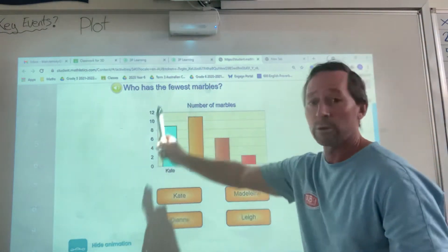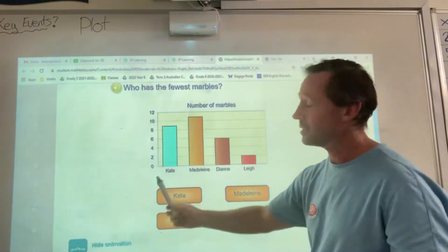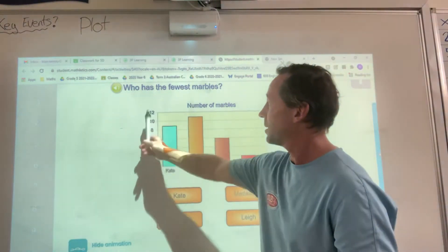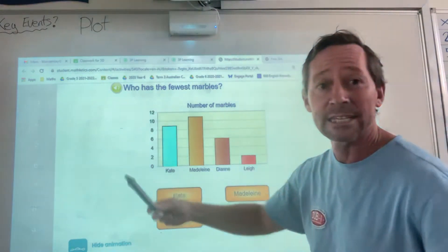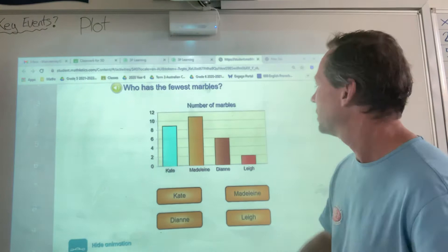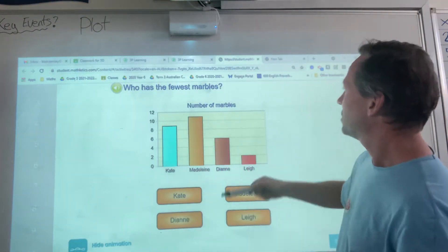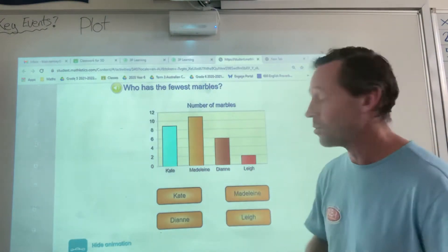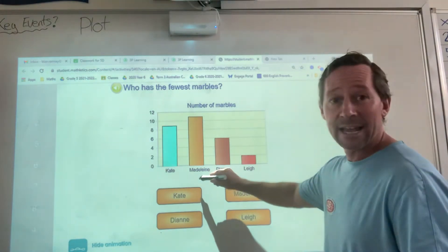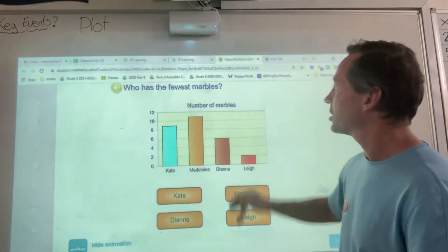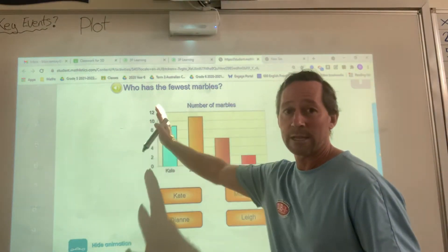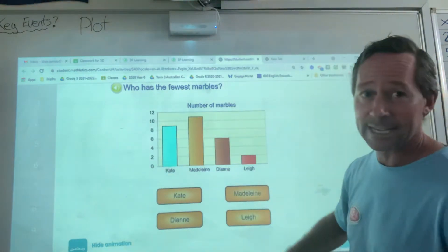And normally we would have labels on these. So, this one, the y-axis, I would label that quantity or amount. This one here has people's names, so I would put names. And if they were 5D names, I'd put 5D names. So, title, got a label for the y-axis and a label for the x-axis.